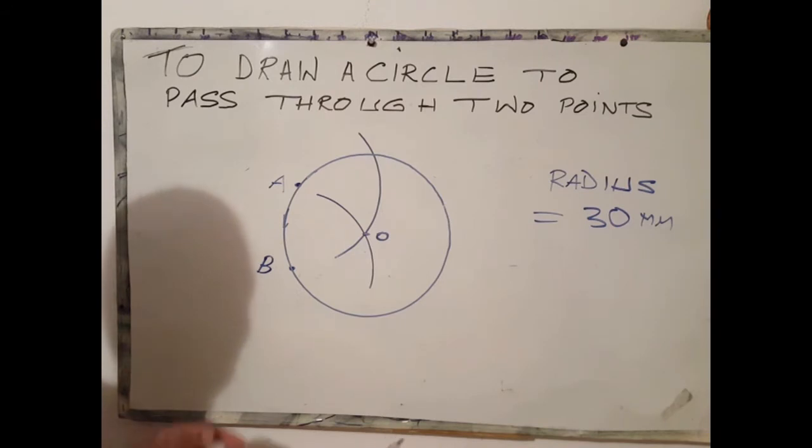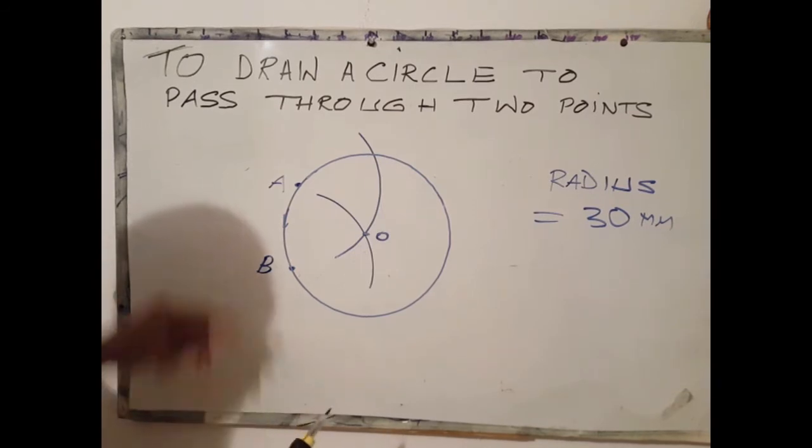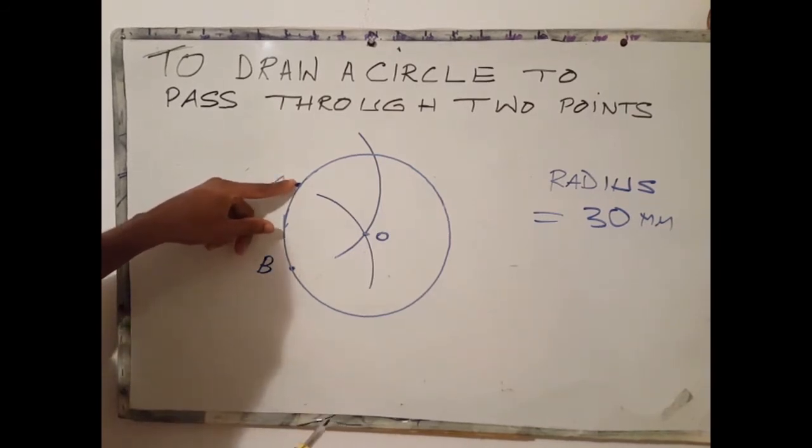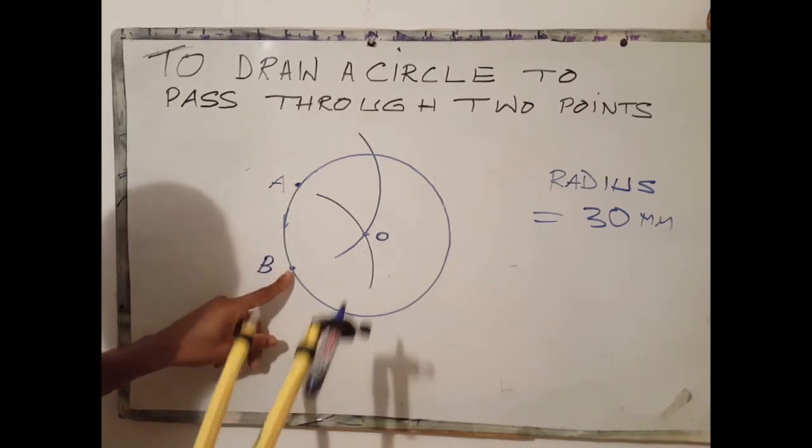It's important to note that to draw a circle to pass through two points, open your compass to that given radius. Whatever the radius is, open your compass to that measurement. Using the first point as center, draw an arc. Using the second point as center, draw an arc.